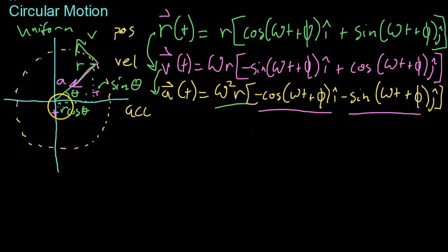In other words, where r comes from the origin and points outwards to where the particle is, a comes from the particle and points towards the origin. So a is what is known as centripetal acceleration.